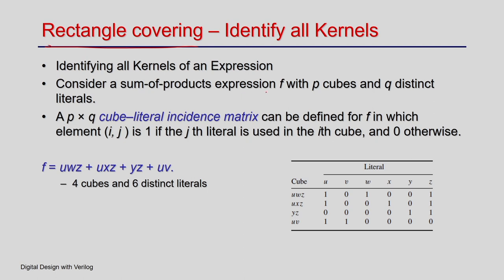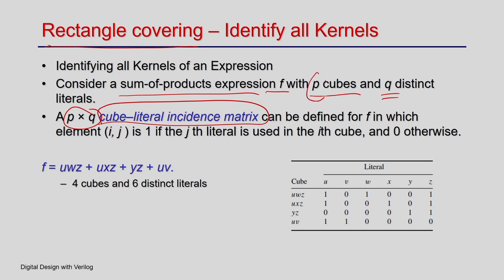The input is a function F in sum-of-product form with P cubes (product terms) and Q distinct literals. We construct a cube-literal incidence matrix of size P×Q: P rows, one per cube, and Q columns, one per literal. As the name suggests, each row represents a cube and each column represents a literal.